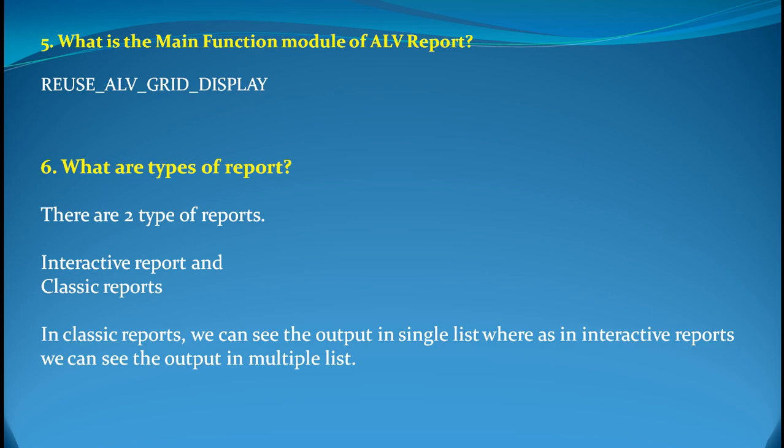In a classical report, the output is in a single list, whereas in an interactive report the output is in multiple lists. That is the reason why an interactive report is also called a drill-down report. Interactive report is basically used to connect one to another, so if there is information related to another, it becomes very easy to handle via list operation. That is the reason why the conventional method of classical reports is slowly getting out of use.